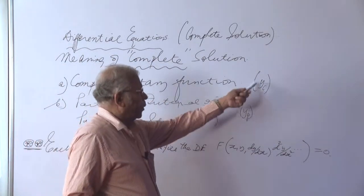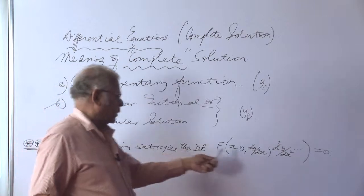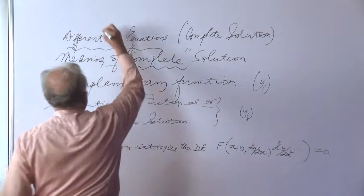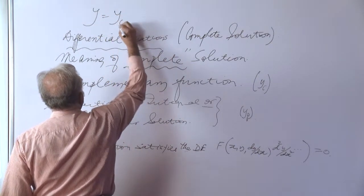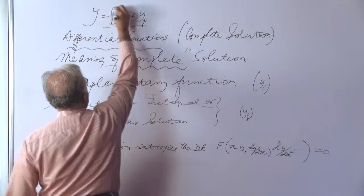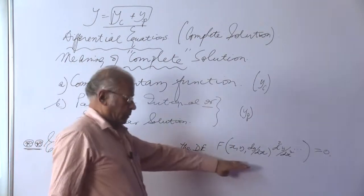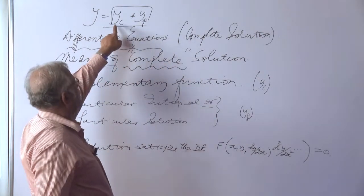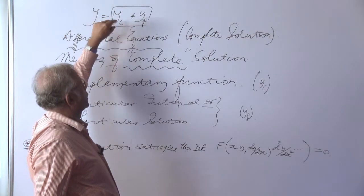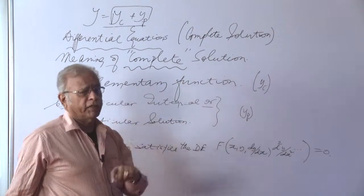If y_c and y_p individually satisfy the differential equation, then it stands to reason that y = y_c + y_p must also satisfy the equation. No constant combination beyond this — just the complementary function added to the particular integral becomes the complete solution of the differential equation.